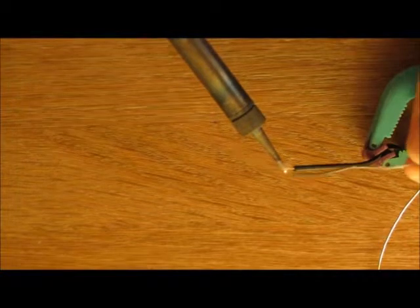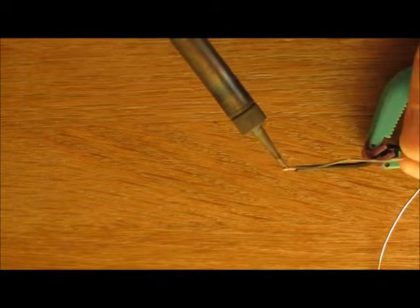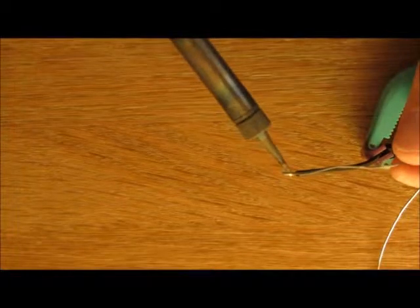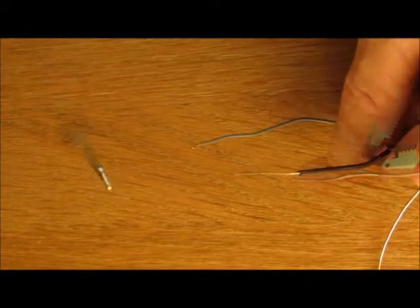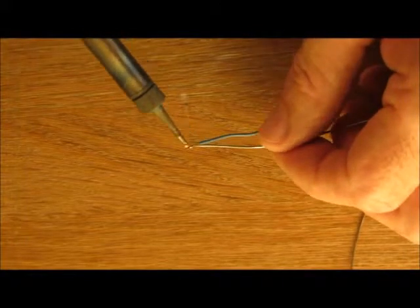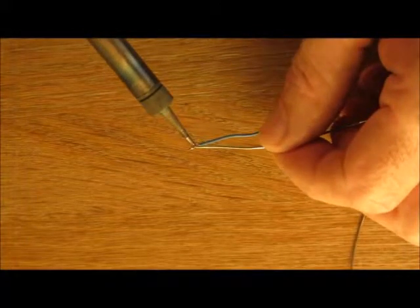Next, I'm going to tin both wires. Hold the tip of the iron against the wire and heat it until the solder wicks into the strands of the wire. With the solid wire, the solder should coat the wire. Less is better. You can remove excess solder by heating the wire and giving it a sharp wrap against the tabletop.